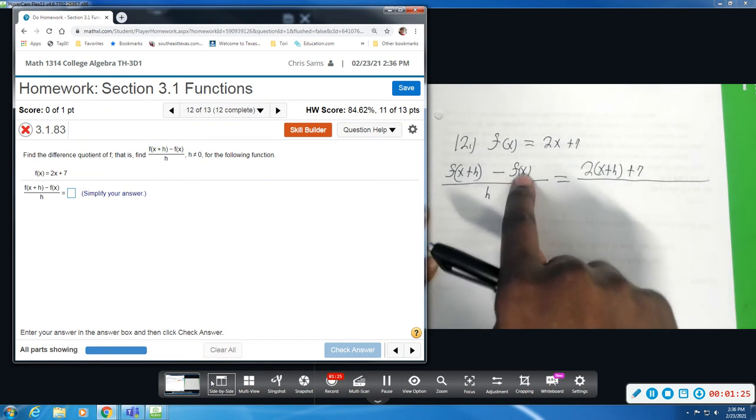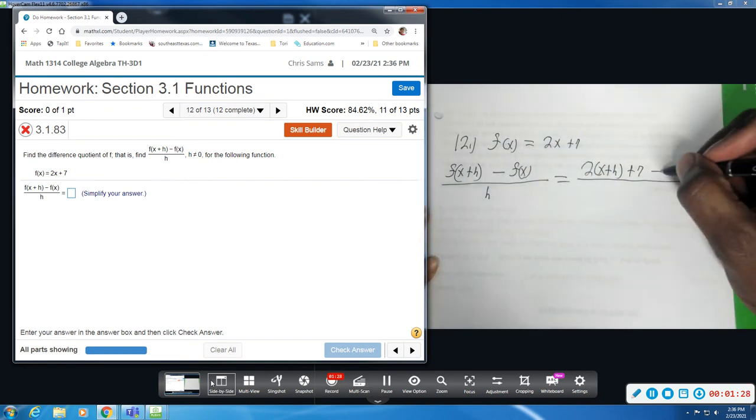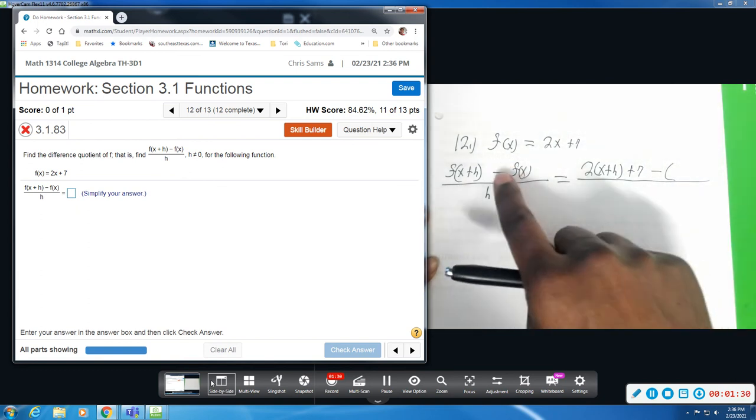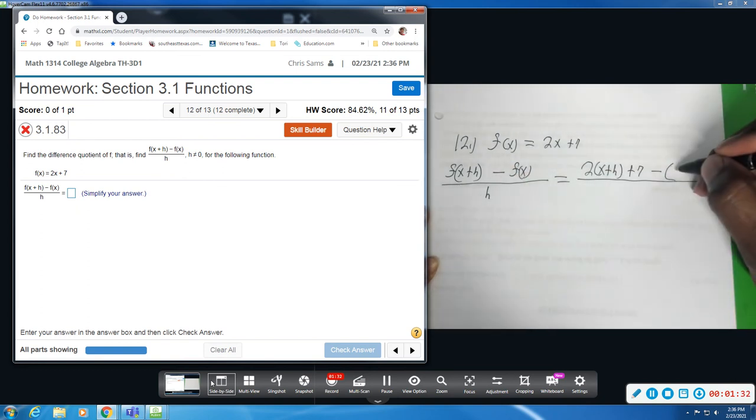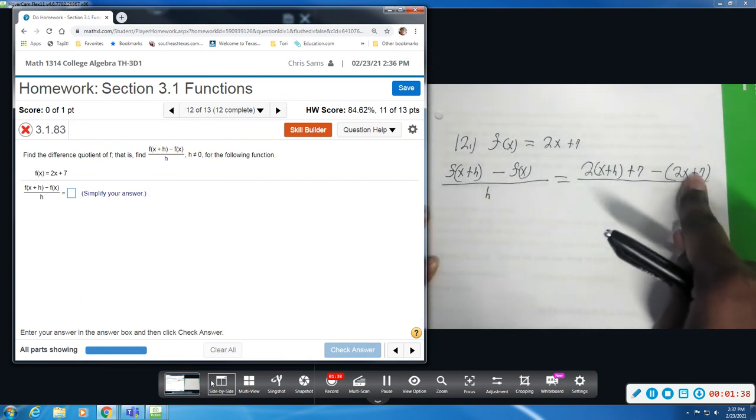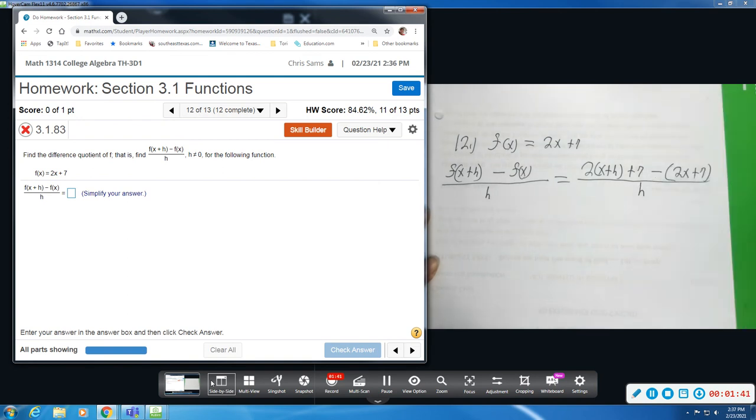Subtract f of x. So, f of x is this. Minus, you have to put that in parenthesis because that negative is going to distribute. So, you have 2x plus 7. We are going to distribute that negative through here in a minute and then divide it by h. So, the setup is half the battle. Once you get this setup, we are going to simplify.